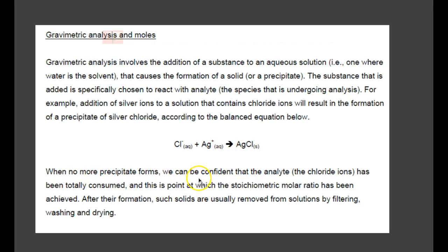When no more precipitate forms, we can be confident that the analyte, the chloride ions, has been totally consumed, and this is the point at which the stoichiometric molar ratio has been achieved. After their formation, such solids are usually removed from solution by filtering, washing, and drying.